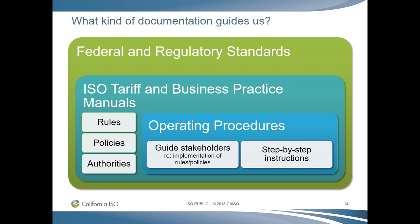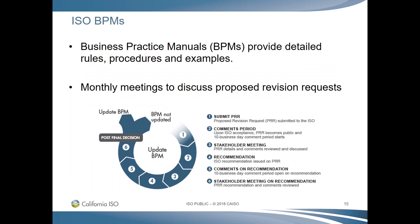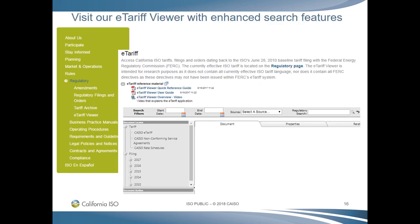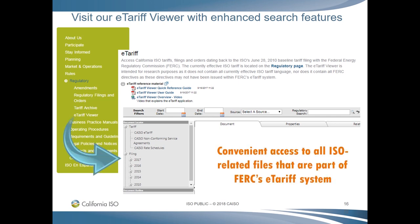A great deal of the documentation we adhere to is defined by federal and regulatory standards. Our primary document is the tariff, which outlines the rates, terms, and conditions under which the ISO operates. The tariff is modified and updated in collaboration with our stakeholders and approved by the Federal Energy Regulatory Commission. We also have Business Practice Manuals, or BPMs, which provide detailed rules, procedures, and examples for the administration, operation, planning, and accounting requirements of the California ISO and the market. To view our tariff, you can visit our eTariff Viewer that offers convenient access to all ISO-related FERC eTariff system files.